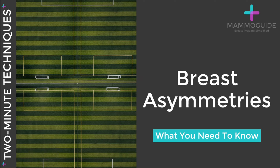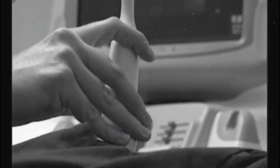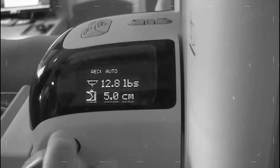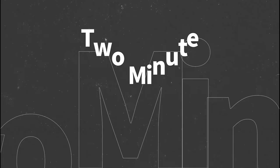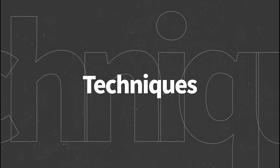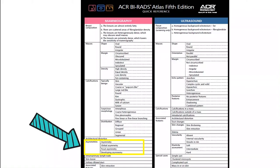In theory, the breast should be symmetric, and we use this symmetry to help us interpret a mammogram. What if the breasts are asymmetric? According to the BI-RADS atlas, there are four main abnormalities that you are looking for on a mammogram: a mass, calcifications, architectural distortion, or an asymmetry.